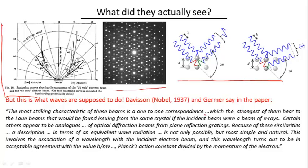And so they actually say in their paper, explicitly, here's a quote from the paper: the most striking characteristic of these beams is a one-to-one correspondence, which the strongest of them bear to the beams that would be found issuing from the same crystal if the incident beam were beam of x-rays. So they're saying if they were to scatter x-rays off the same crystals, they would show the same picture.